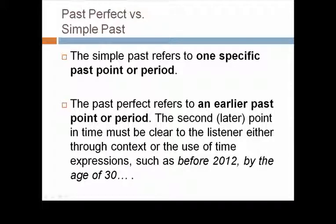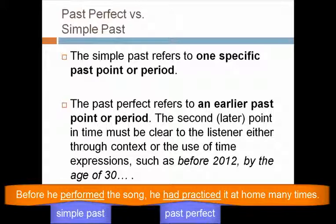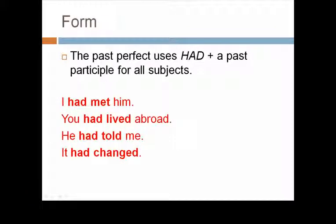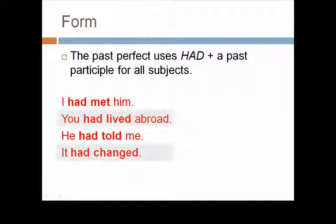Consider this example. Before he performed the song, he had practiced it at home many times. Practice is the earlier of the two actions. When you form the past perfect, remember it uses had plus a past participle for all subjects. Here are some more examples. I had met him. You had lived abroad. He had told me. It had changed. You see examples of regular verbs and irregular verbs.